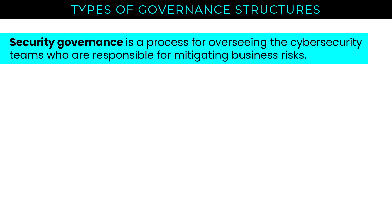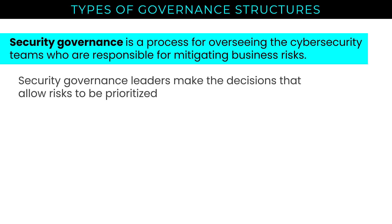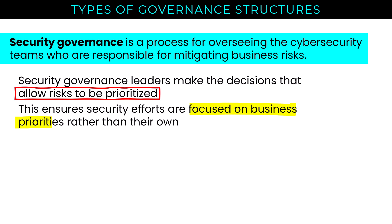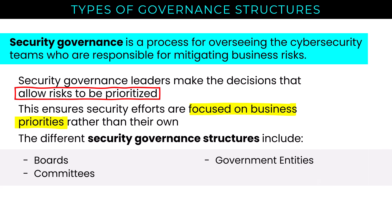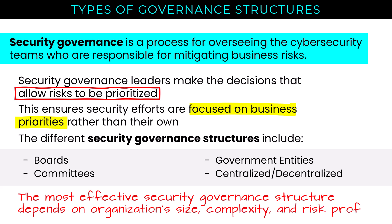Let's shift gears and talk about types of governance structures. Security governance is a process for overseeing cybersecurity teams responsible for mitigating business risks that are security-related. Security governance leaders make decisions that allow risks to be prioritized, ensuring security efforts are focused on business priorities. There are a number of different security structures that may be employed, including a board, a committee, or even a government entity. These governance structures can be centralized or decentralized. The most effective structure depends on the organization's size, complexity, and risk profile.